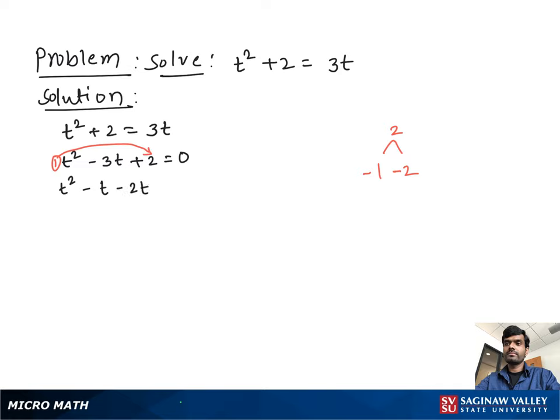So write t square minus t minus 2t plus 2 equal to 0. From this pair, we take out t as a common. So we have t minus 1. Now from this pair, we take out minus 2 as a common. We have t minus 1 all equal to 0.